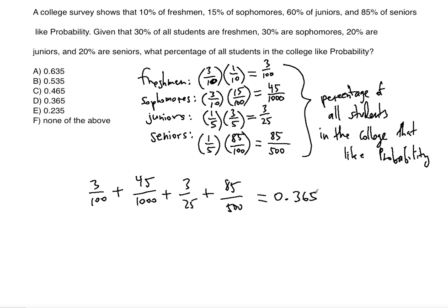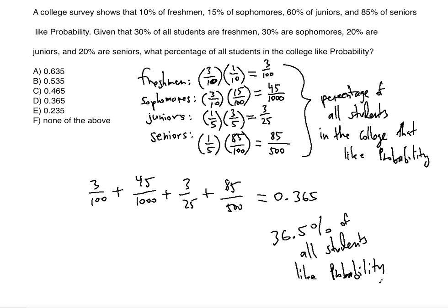This is the probability. If you want to convert it to a percentage, you multiply by 100 to get 36.5% of all students like probability. But in this case you're just asked to find the probability, and the probability will always be less than one. So the answer is 0.365, which is answer choice D.